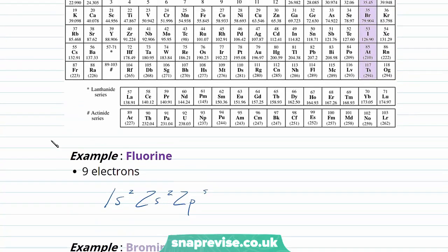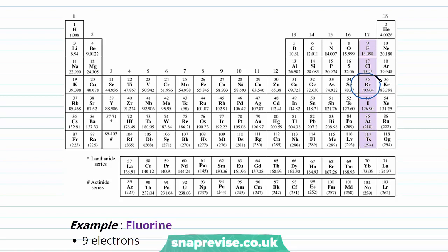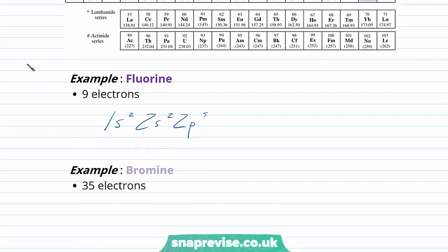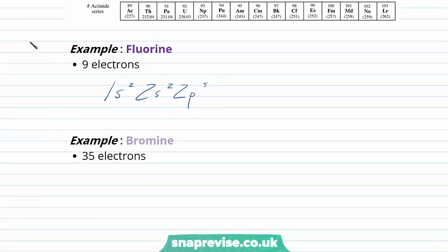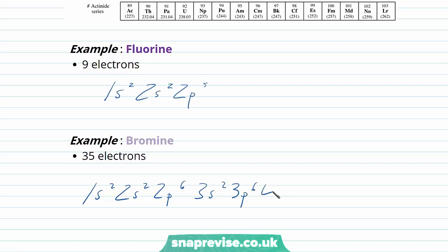Now looking at bromine. If we go back to the periodic table, you can see bromine is over here. Bromine is a halogen and has 35 electrons. Its electronic configuration is a bit longer: 1s², 2s², 2p⁶, 3s², 3p⁶, then we fill our 4s² and completely fill our 3d¹⁰ shell, and finally our 4p shell which holds the five outer electrons. So again, bromine has five outer electrons held in a P orbital.